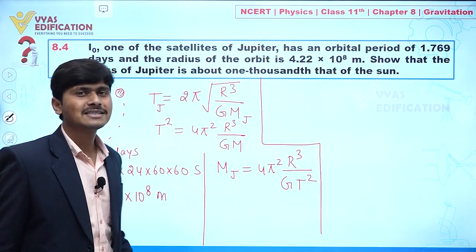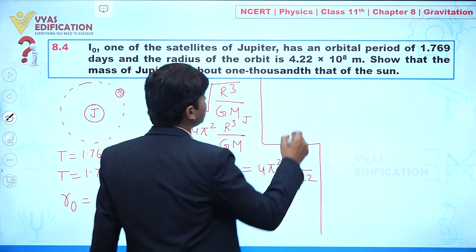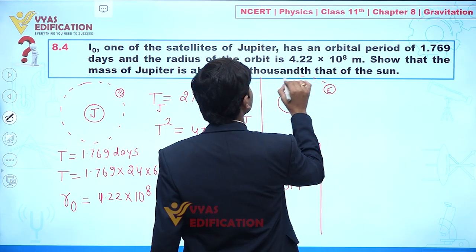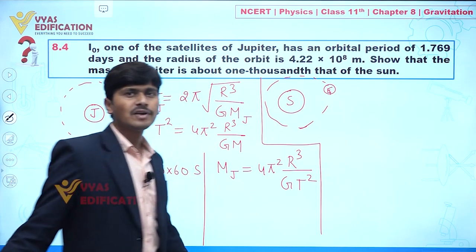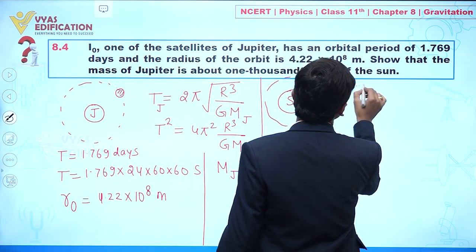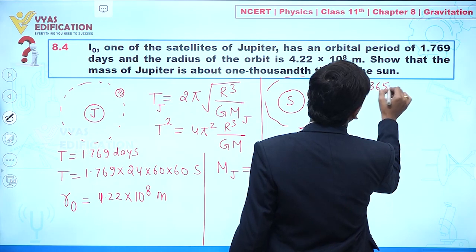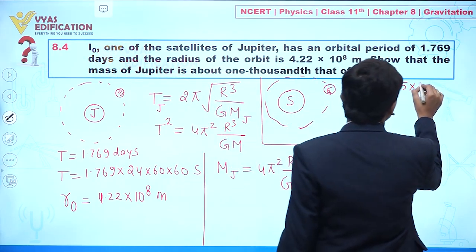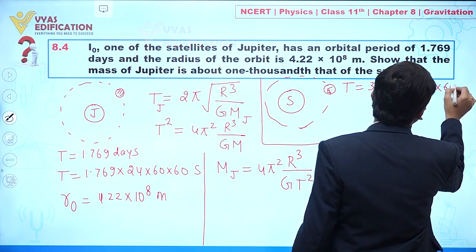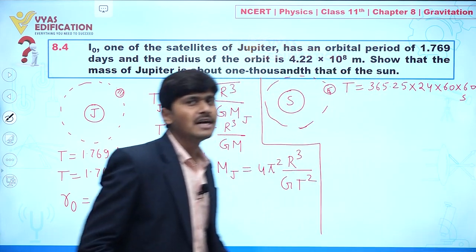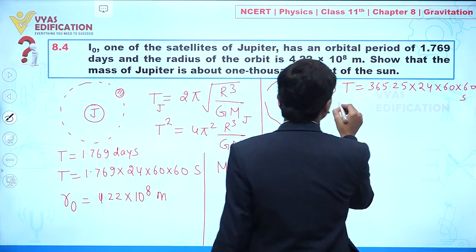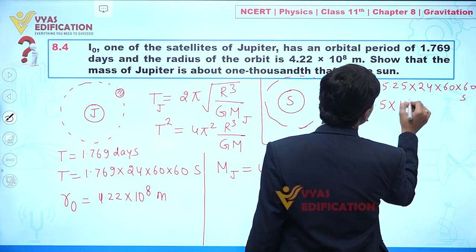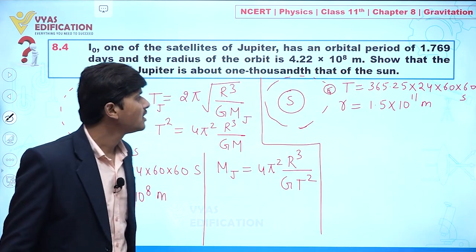Now if we talk about the Earth-Sun system: the Sun is at the center and Earth is a planet revolving around it. The time period of Earth is 365.25 days, which we convert into seconds, and the distance between Earth and Sun is 1.5 × 10¹¹ meters.